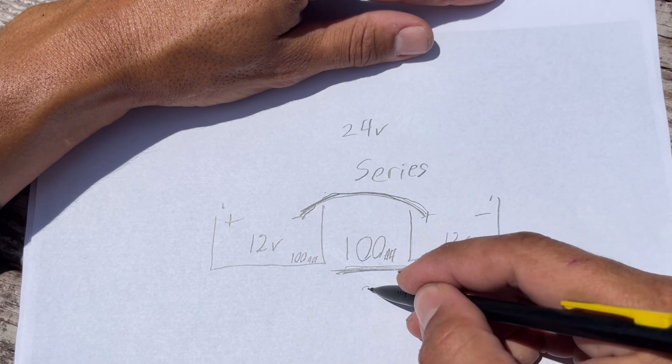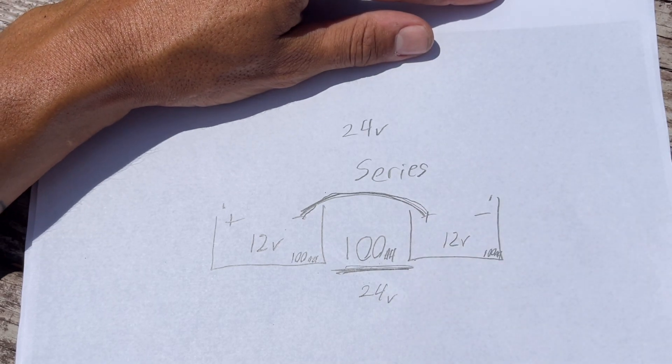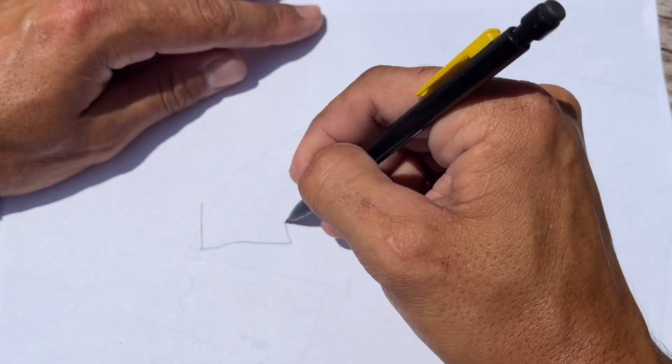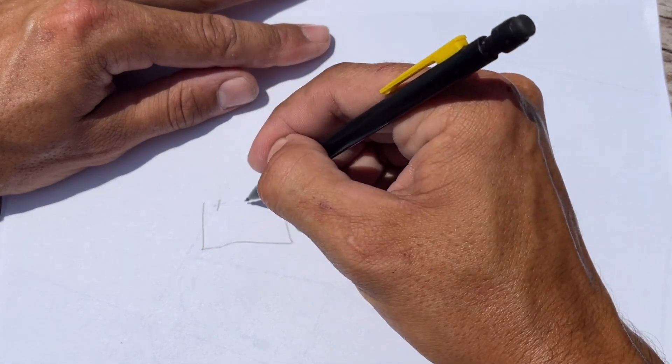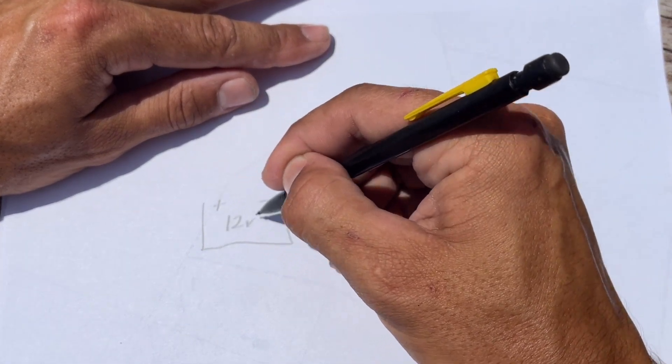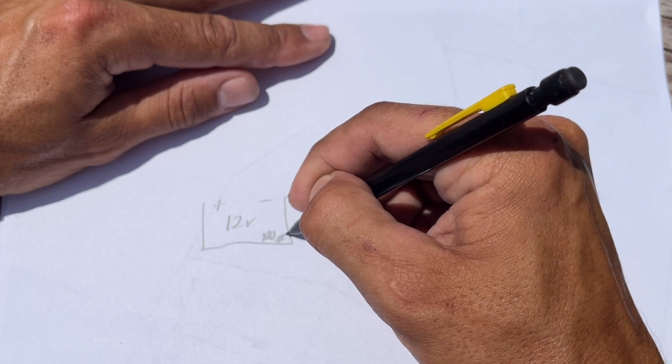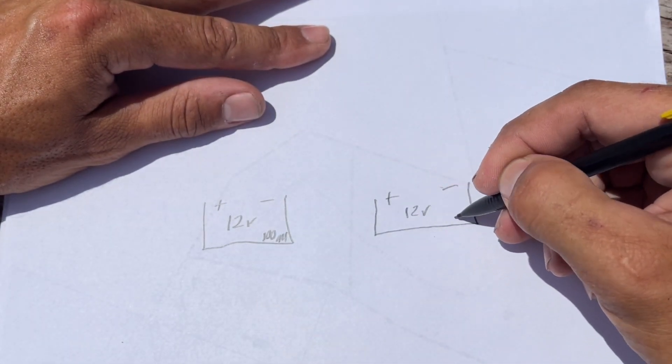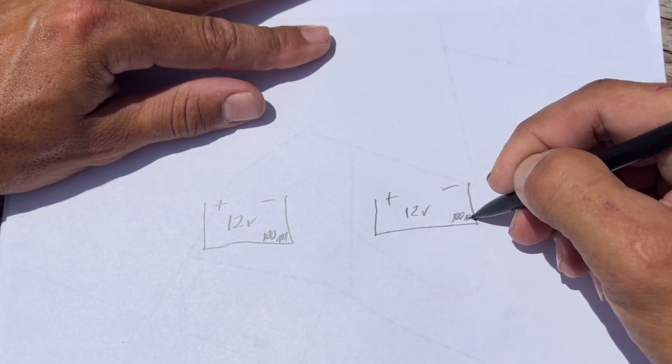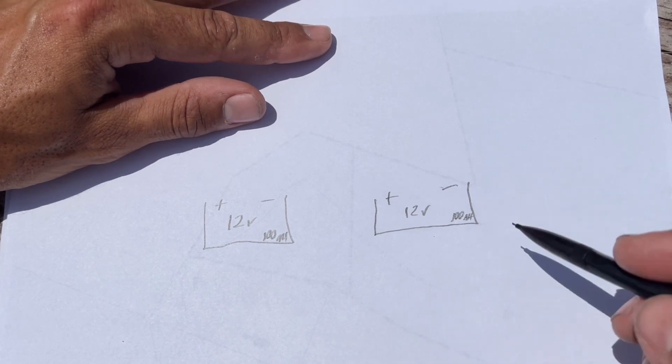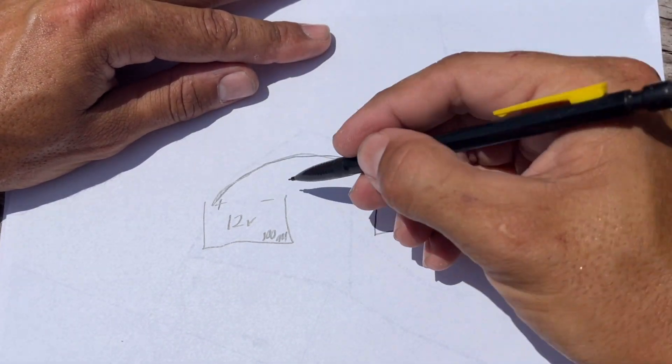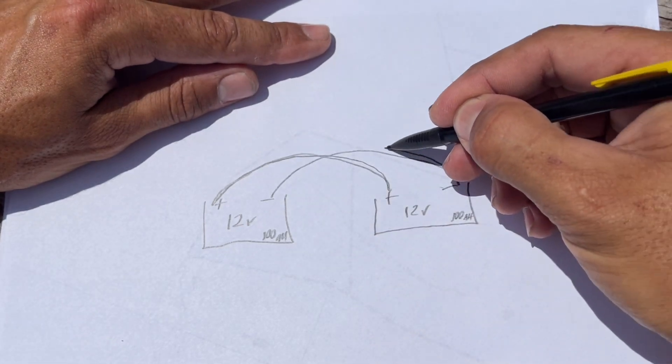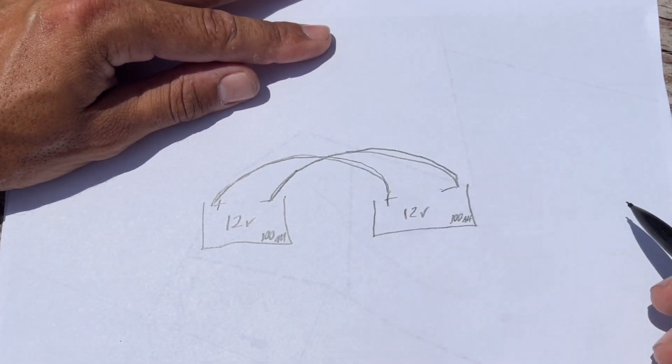Now, let's see the same scenario where we have a positive and a negative, a positive and negative, and this is a 12-volt 100-amp-hour battery, and this is a 12-volt 100-amp-hour battery. Now, to connect in parallel, what you do is you connect your two positives together, and then you connect your two negatives together. This is called a parallel connection.